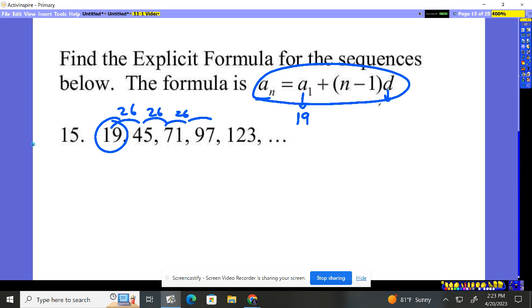So 26 is our d value. Therefore, a_n equals 19 plus (n minus 1) times 26.